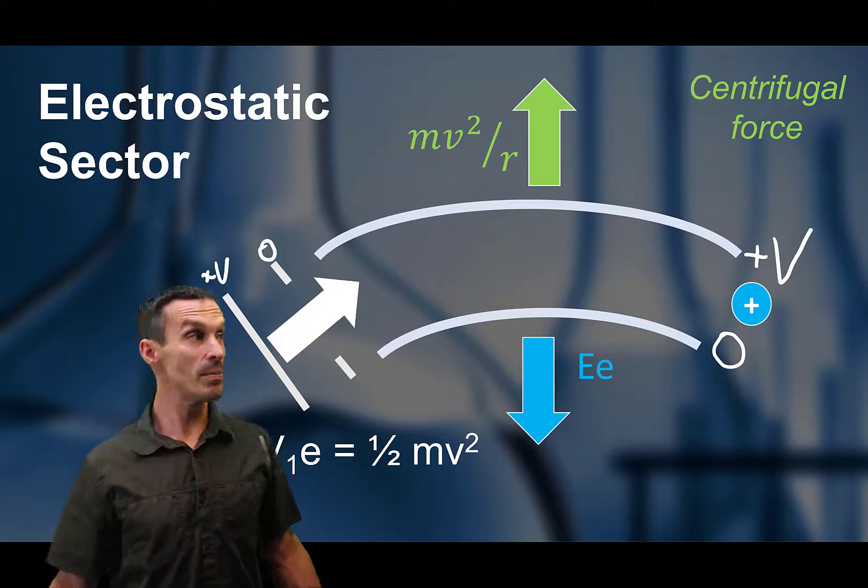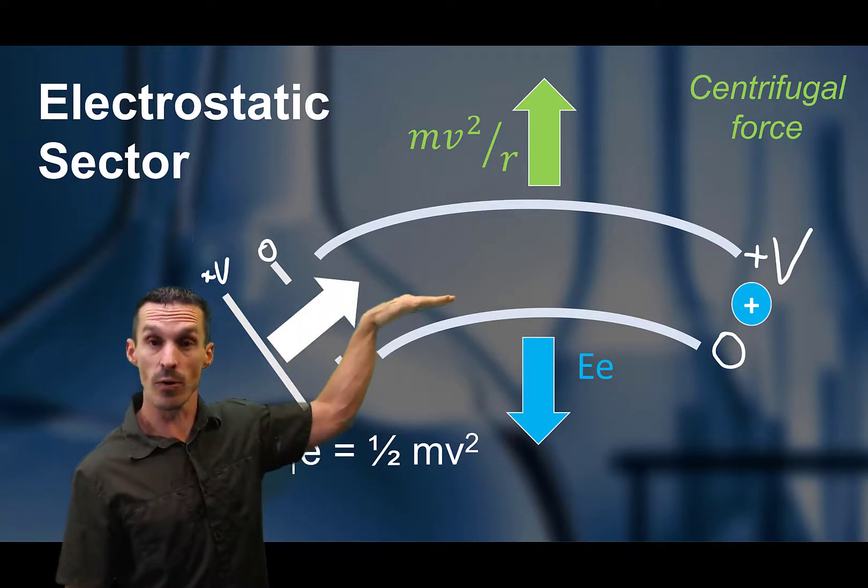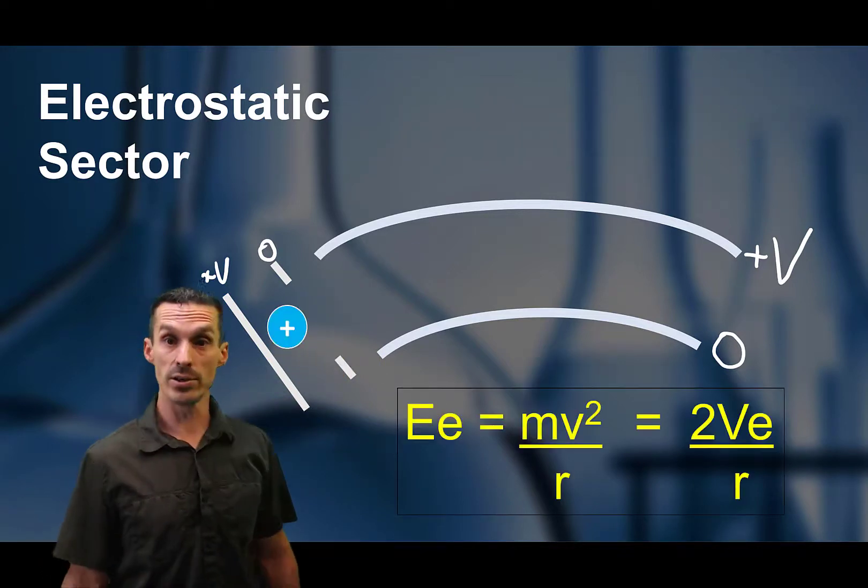The centripetal force is mv squared over r. So according to Newton's law, because the ion isn't accelerating up or down, these two forces are going to be equal to one another. So there's the math that you see right here.